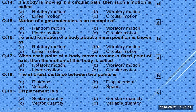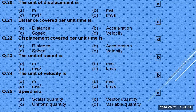When each point of a body moves around a fixed axis, the motion is called rotatory motion. The shortest distance between two points is called displacement. Displacement is a vector quantity — it is the best example of a vector quantity. The unit of displacement is meter.